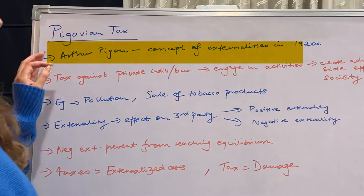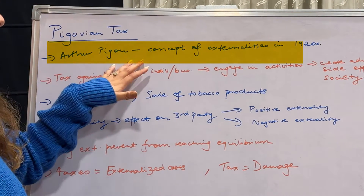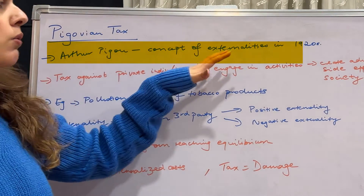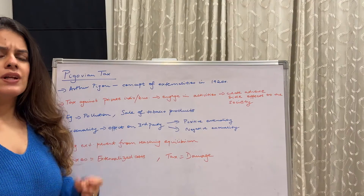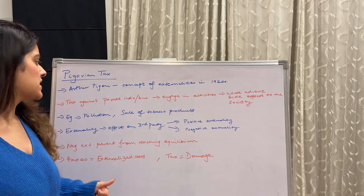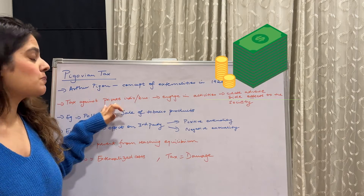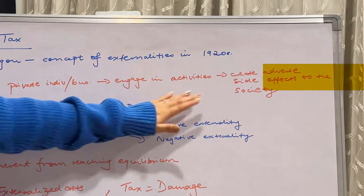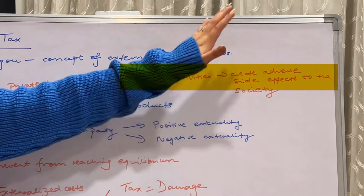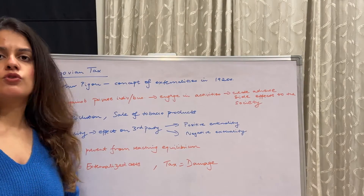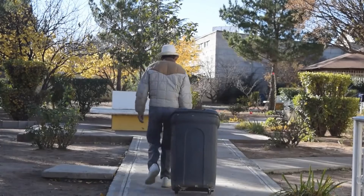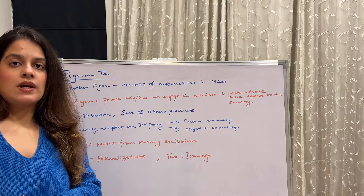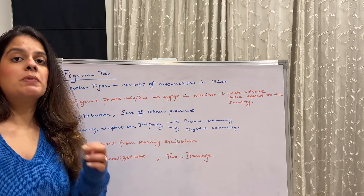Pigovian tax was given by Arthur Pigou, who created this concept of externalities back in the 1920s. It is a tax against private individuals or businesses that engage in activities that create adverse effects to the society — any individual doing anything which creates an adverse effect on society has to pay the Pigovian tax.